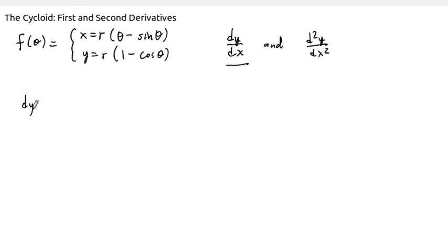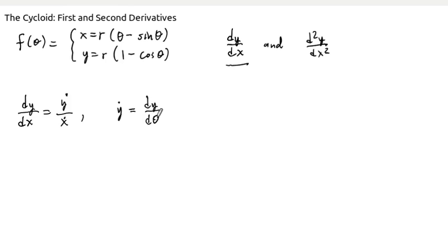The formula for this is pretty straightforward — it's just y-dot over x-dot. The dot derivative here means we're computing dy/dθ. Theta is the parameter here, not t. Most of what we've done so far the parameter has been t, but it doesn't have to be — it can be any parameter. In this case, theta is playing the role of the parameter. So let's compute these two derivatives.